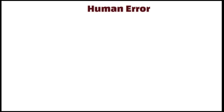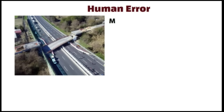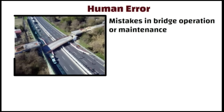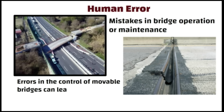Human error: human factors such as mistakes in bridge operation or maintenance can also contribute to bridge collapses. For example, failure to close expansion joints properly or errors in the control of movable bridges can lead to accidents.